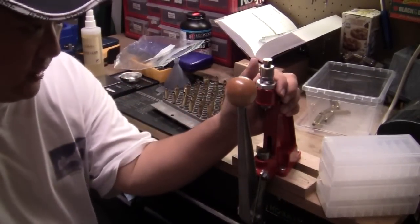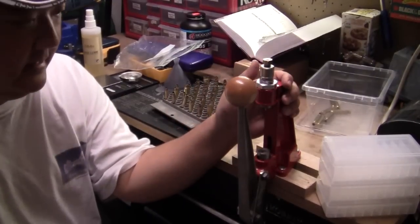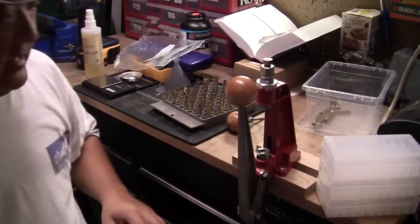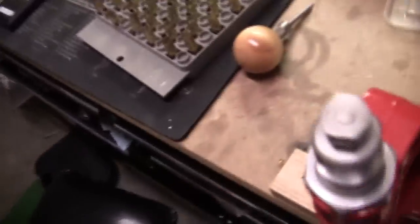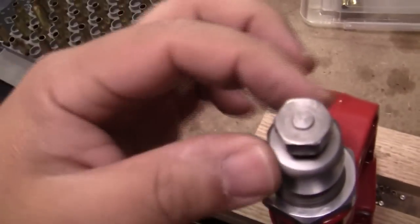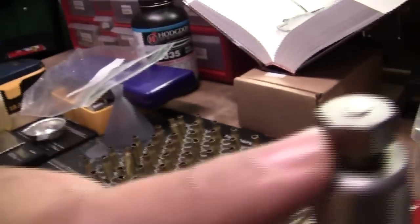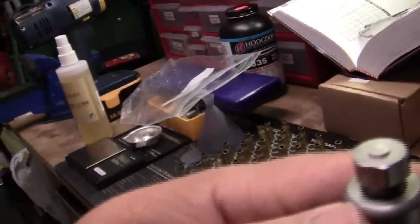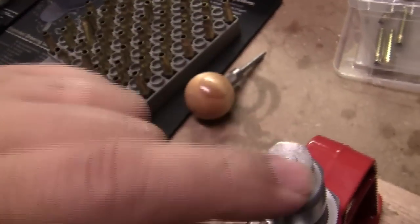Now, one thing I do want to point out is that if you do get a piece of brass stuck in the die, there is an easy way to get it out. Let me see if I can show you from the top here. If you look at the top of the die, you have that little pin. If you loosen this nut right here, this retaining bolt or whatever it's called.